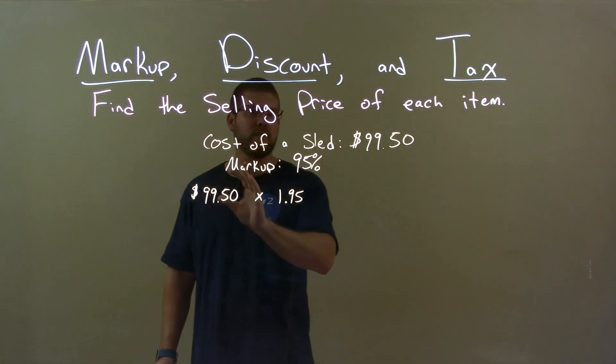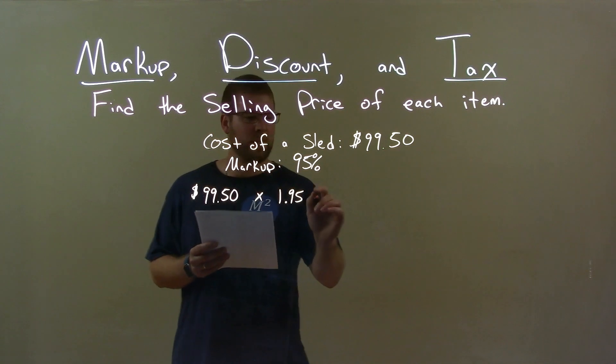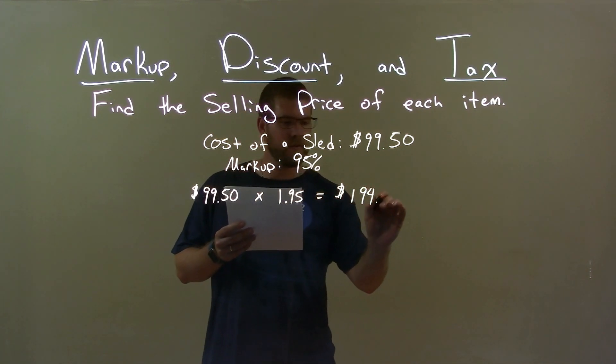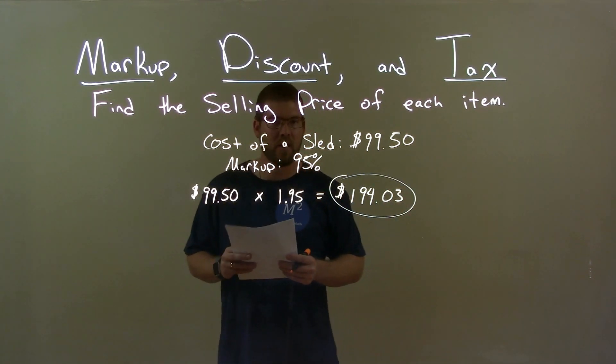The 1 represents the cost of the sled, and the 0.95 says we're adding 95% to that. That comes out to be a markup cost of $194.03, and so that is our final cost.